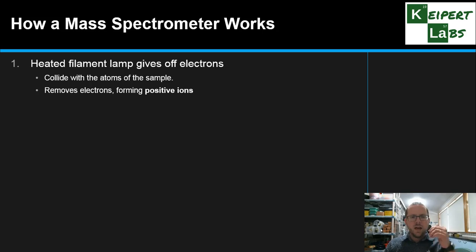The first one is that we get a heated filament lamp, like the sort of thing that you'd have in an incandescent globe, which gives off electrons. That beam of electrons is fired at right angles with the atoms of the sample that is injected. The electrons are fired at right angles in order to collide with the atoms of the sample. As that collision happens, it knocks electrons off the existing atom, leaving a positive ion or a cation behind. So we have the atoms that entered have now become positive ions.